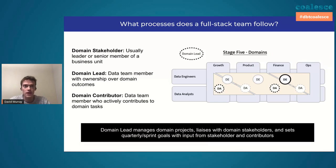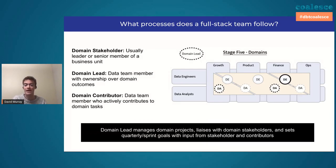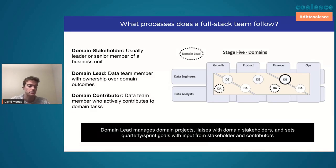One of the reasons domain leaders really like this structure is because they have ownership over all the outcomes for a given area of the business and can pitch in on other domains as a contributor — so they get different types of work and they're not pigeonholed into one area. The reason business stakeholders really like this structure is because they have one person they talk to, and they know that person is a specialist who can prioritize for them and be their data champion for that area of the business.